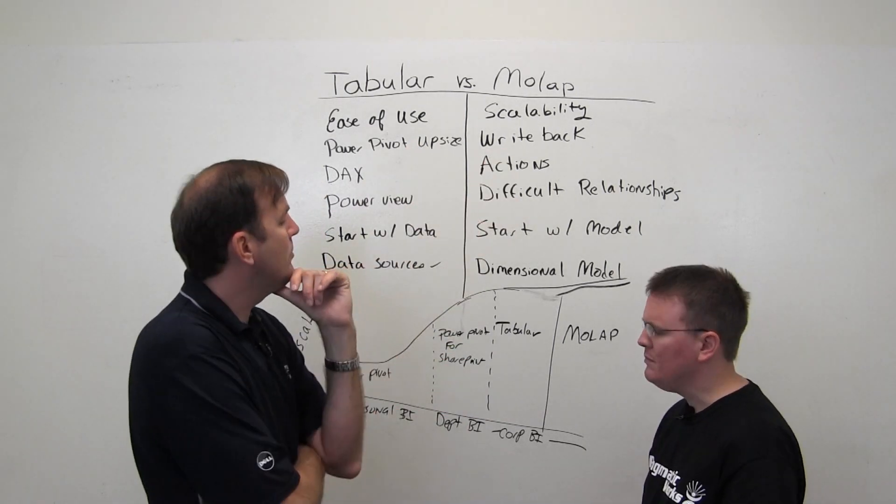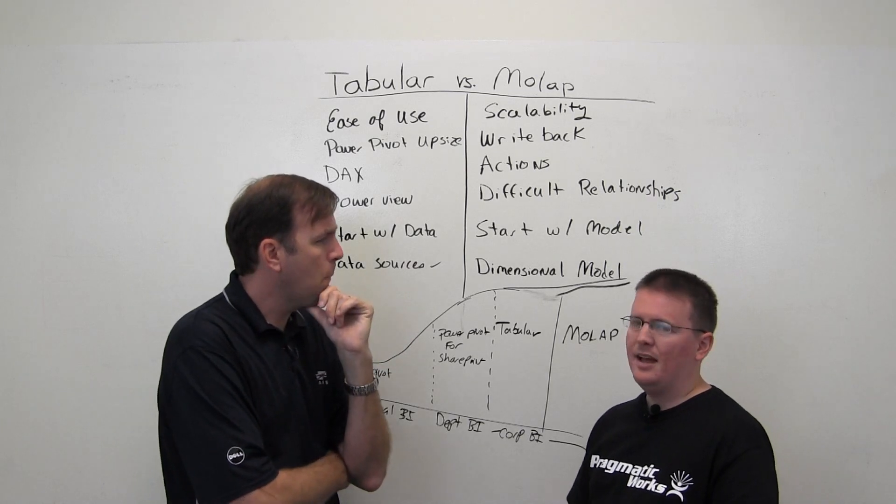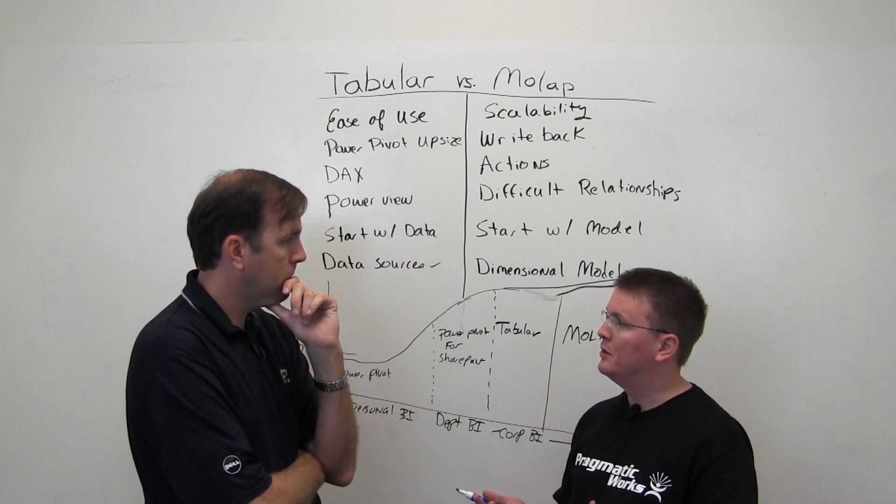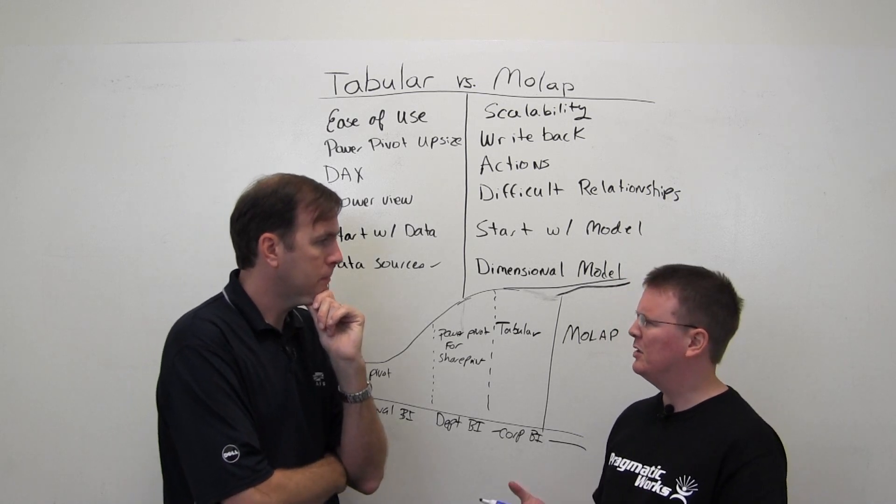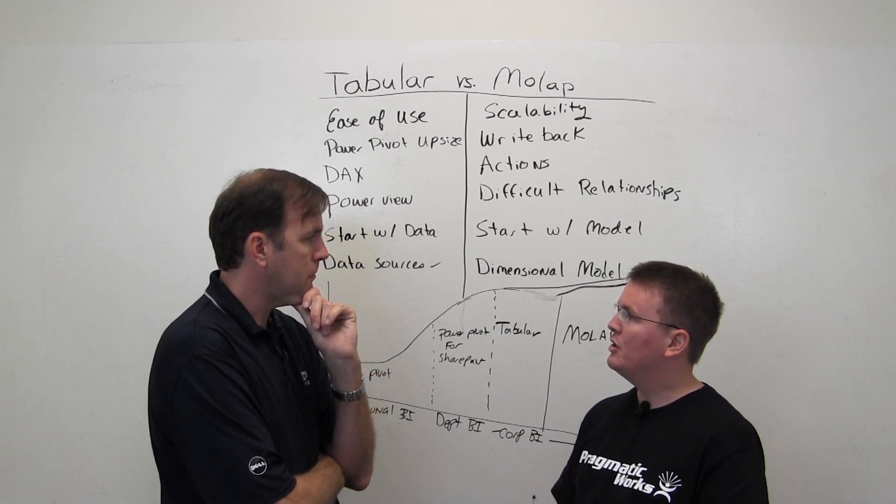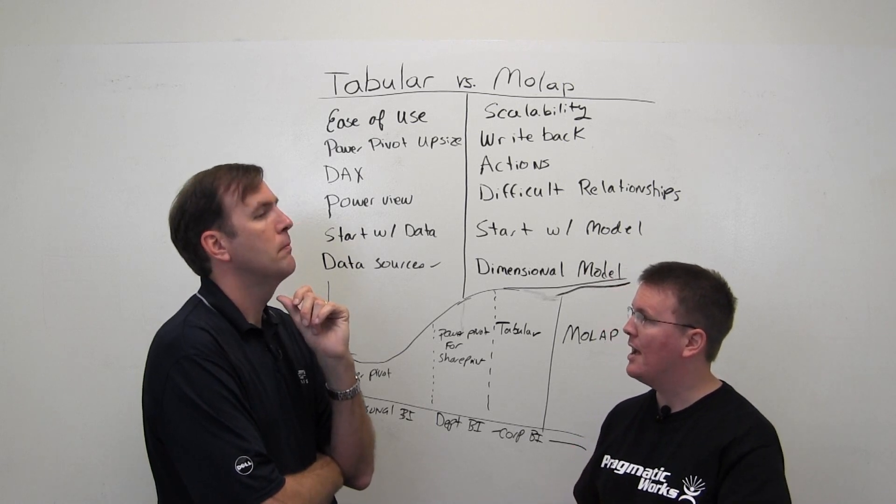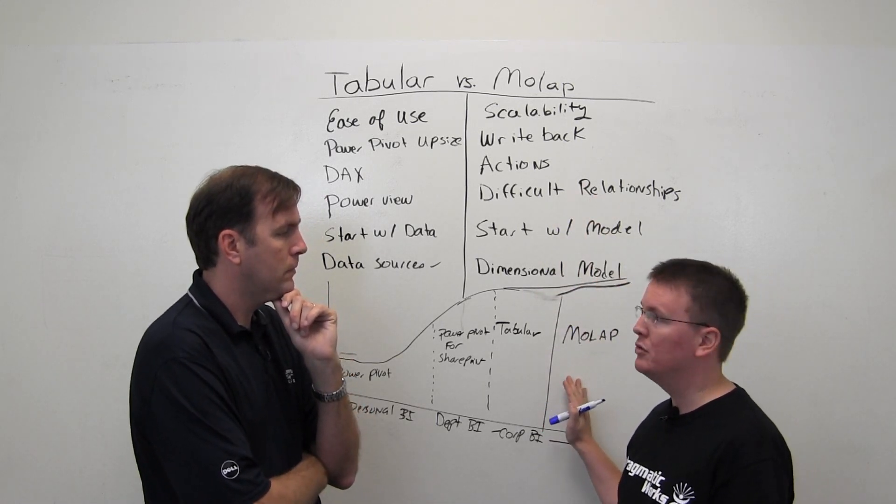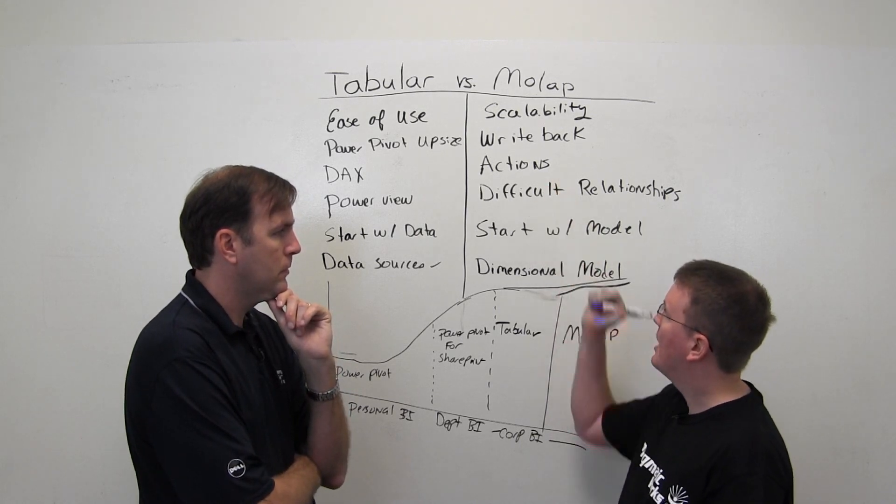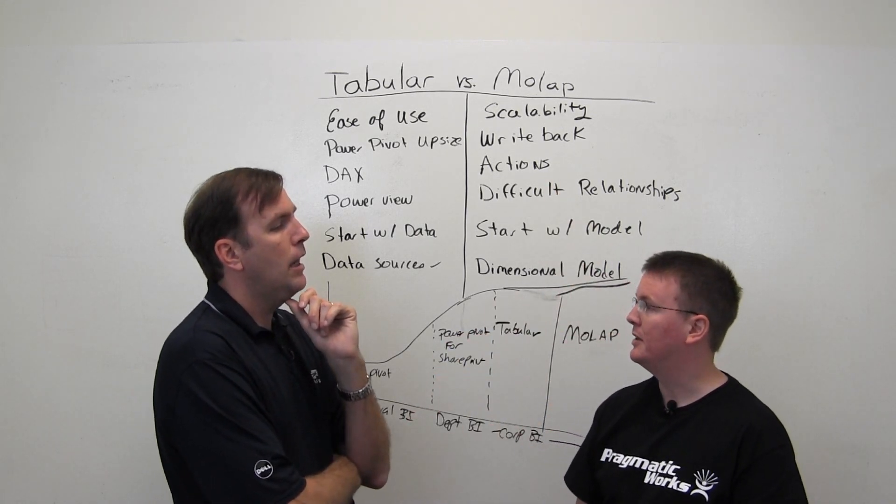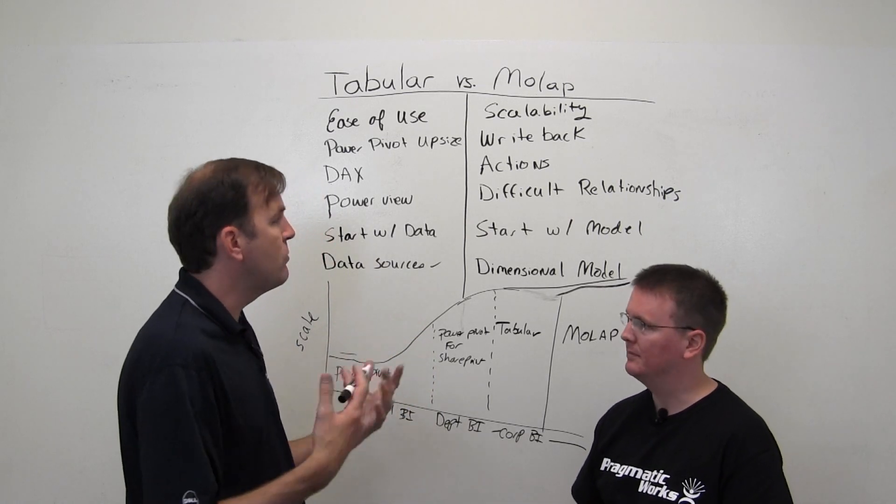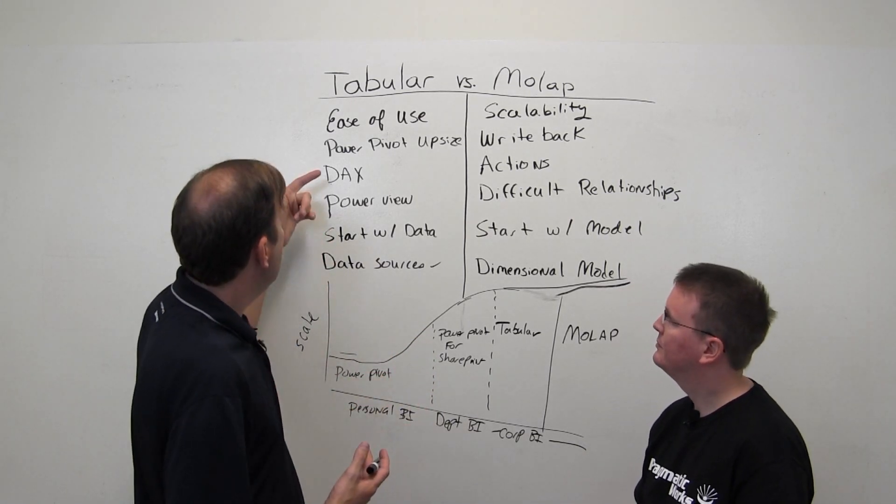Write-back is a feature that's only, as of right now, only available in the multidimensional version of analysis services. Basically, this is used often for budgeting, where I actually want to write back data to the database. So I have the back-end database that's being my model underneath my multidimensional cube. I can actually, using write-back, send data back to the SQL Server database. So it's much more like budget planning. Those kind of things, performance reviews, quotas, those kind of things.